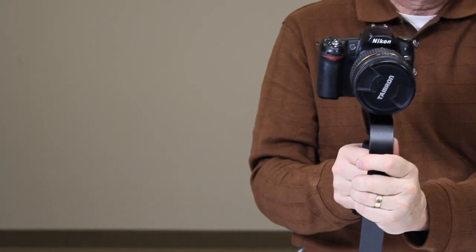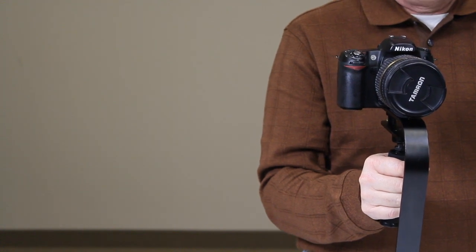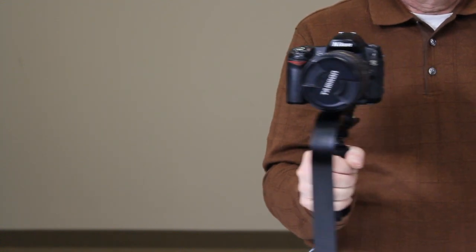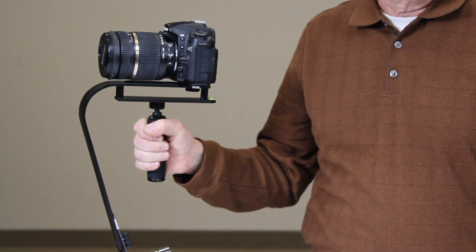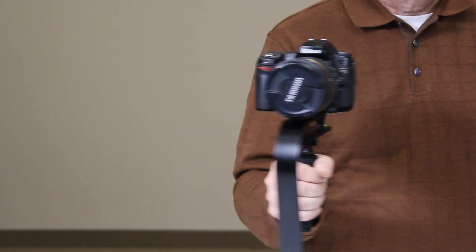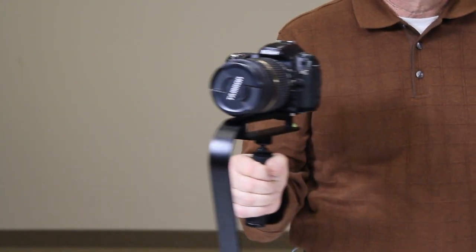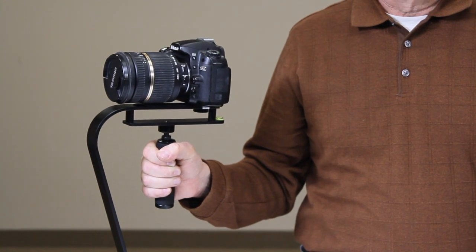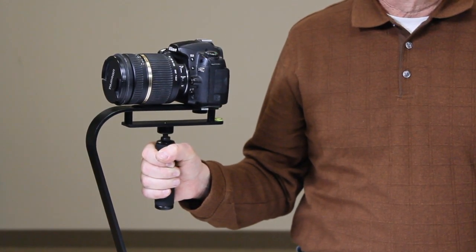Take a look now. As you can see, my camera is fairly well balanced. It might take a little tweaking, but it already moves very smoothly. So I can get some nice, smooth video shots. And that's how you assemble the Cowboy Studio Stabilizer. Thank you.